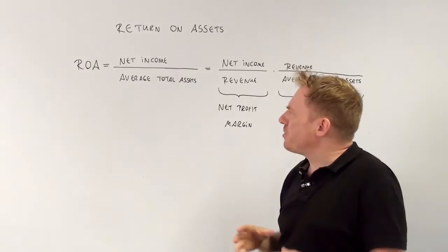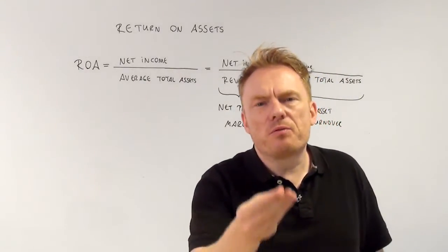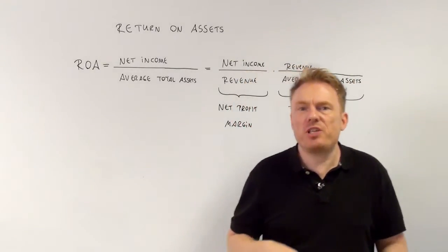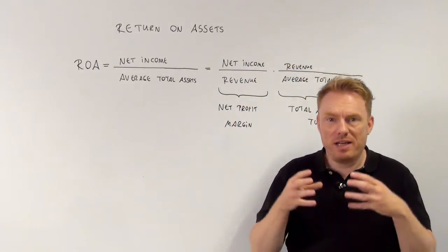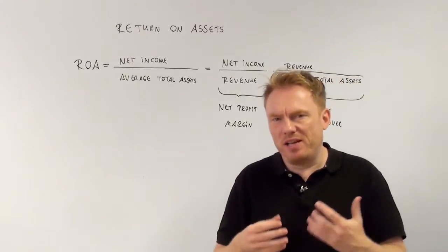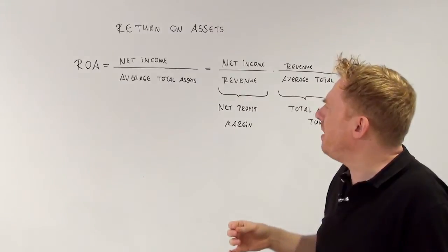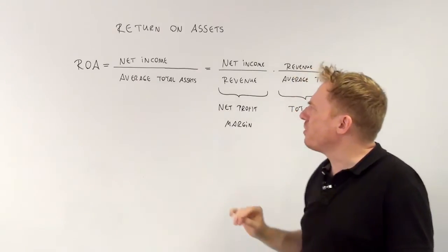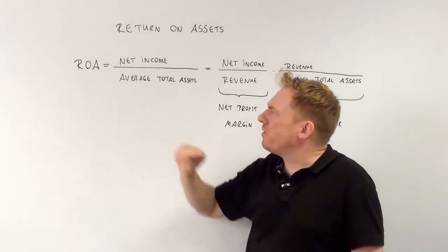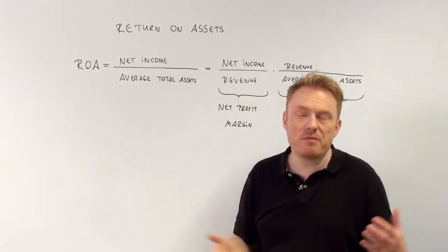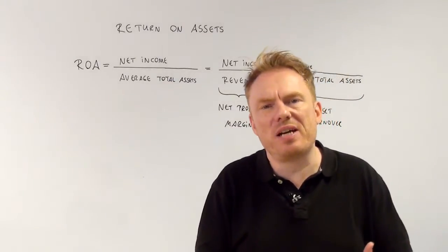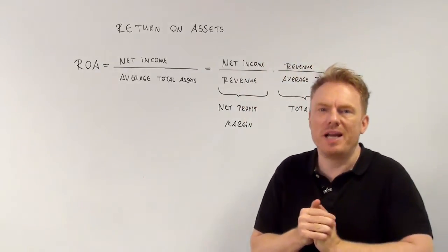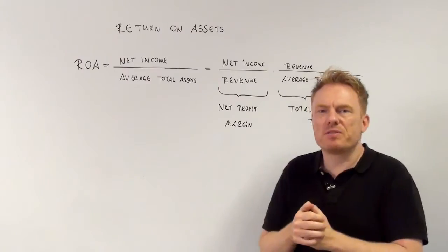So net income divided by average total assets — what is net income? If we have revenue minus the relevant costs including depreciation, and afterwards subtracting taxes that the company needs to pay, then we get net income. So net income divided by average total assets is return on assets. For example, if we have a result of six percent, it means that with regard to your total assets there is a return of six percent.